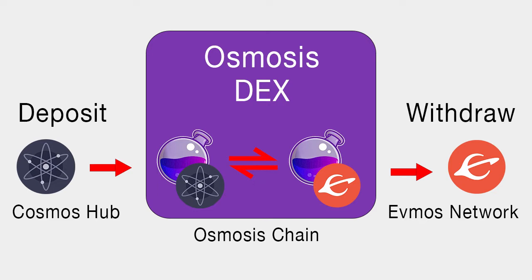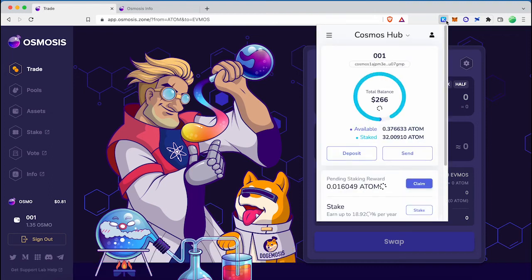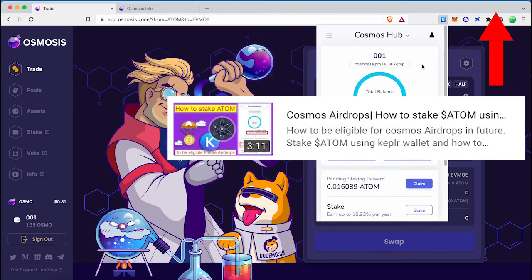After the swap process is done, you can send back your coins to their own chain by using IBC transfer. If you don't know how to send ATOM coins to your Keplr wallet, watch my previous video first.